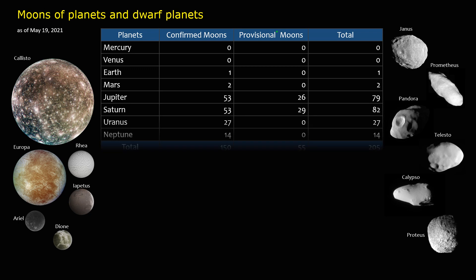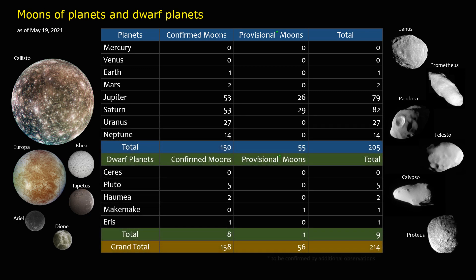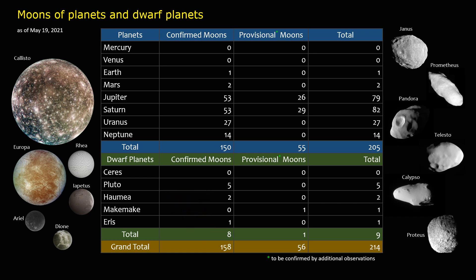Moons of planets and dwarf planets: there are 150 confirmed moons for the planets and 8 for the dwarf planets, a total of 158 confirmed moons. Together with provisional satellites, this brings the grand total to approximately 214 moons or satellites.